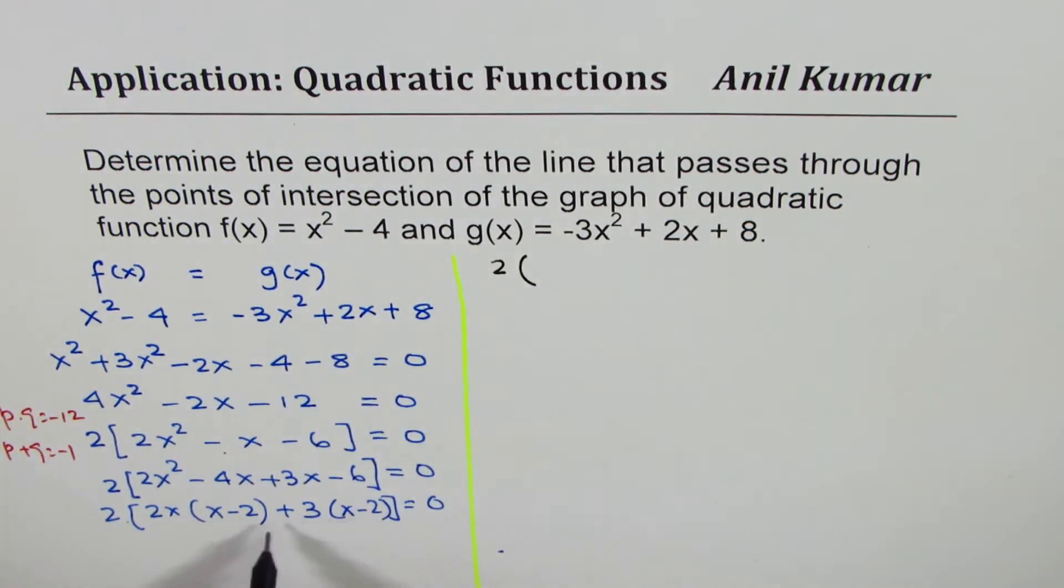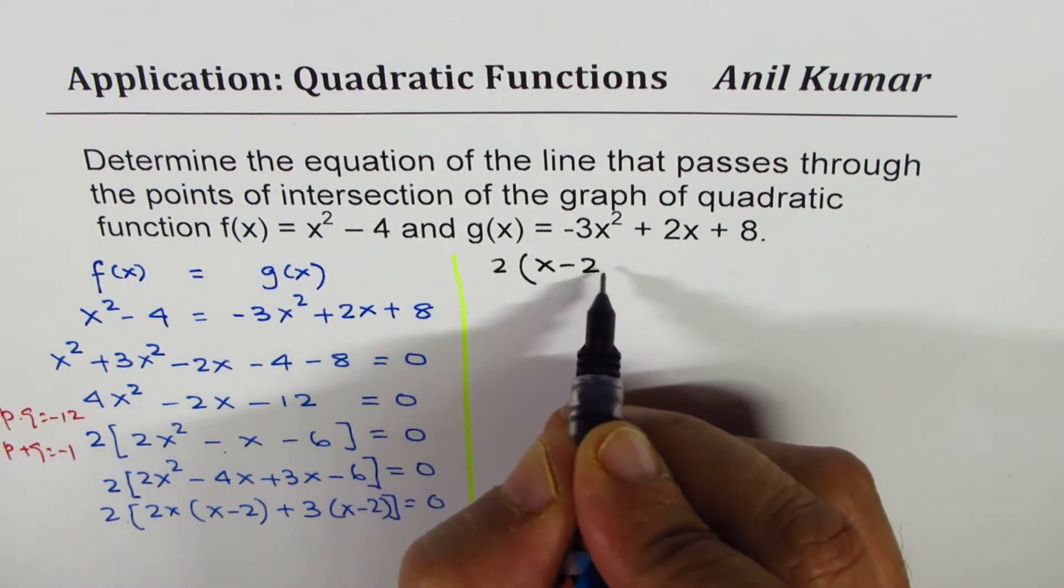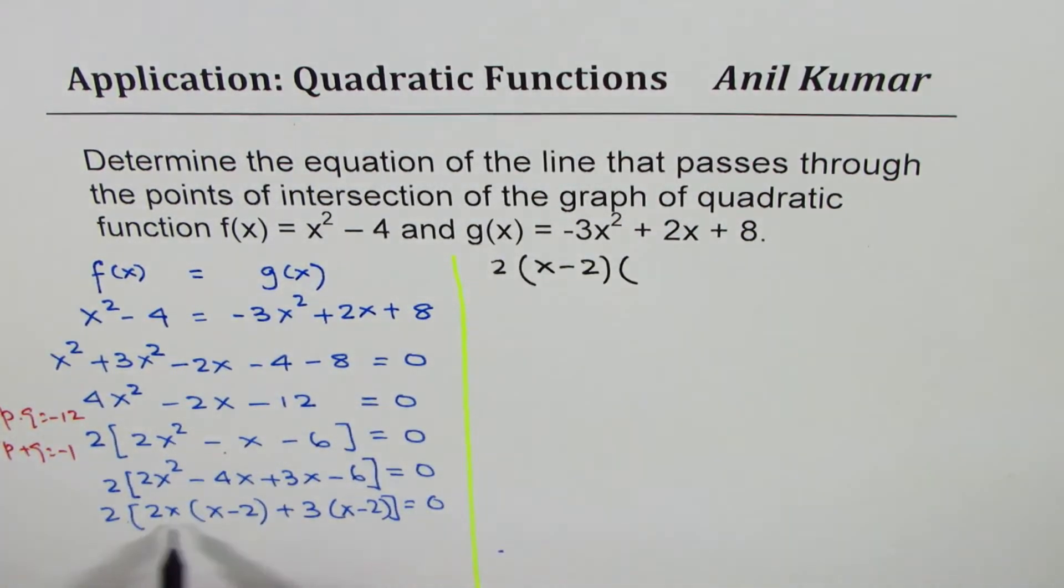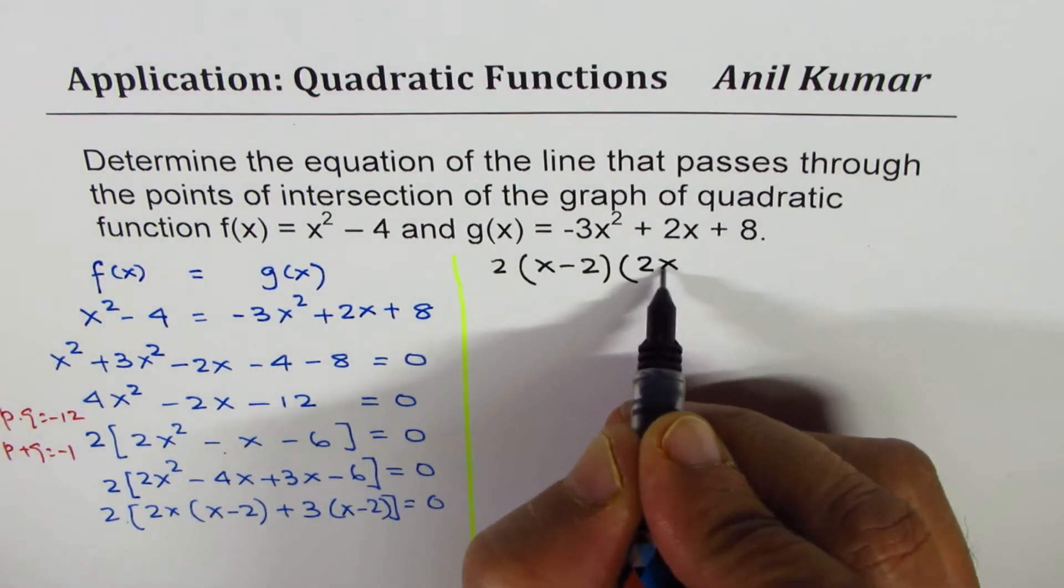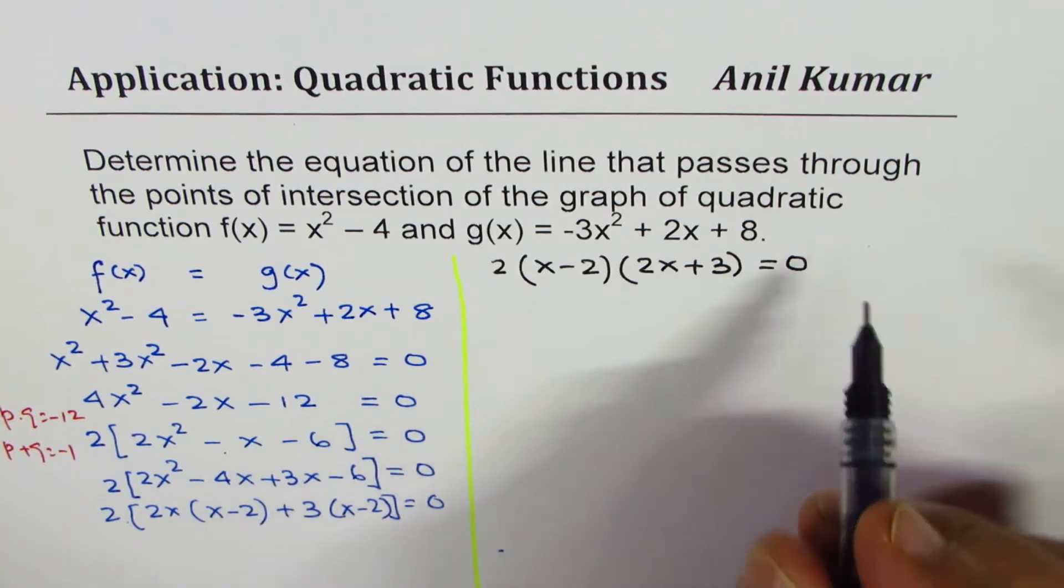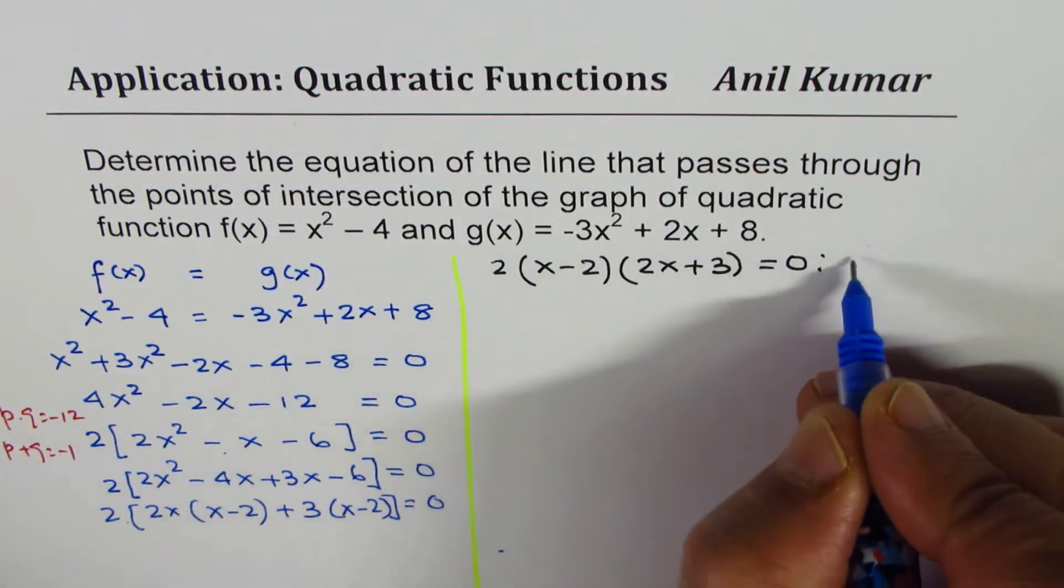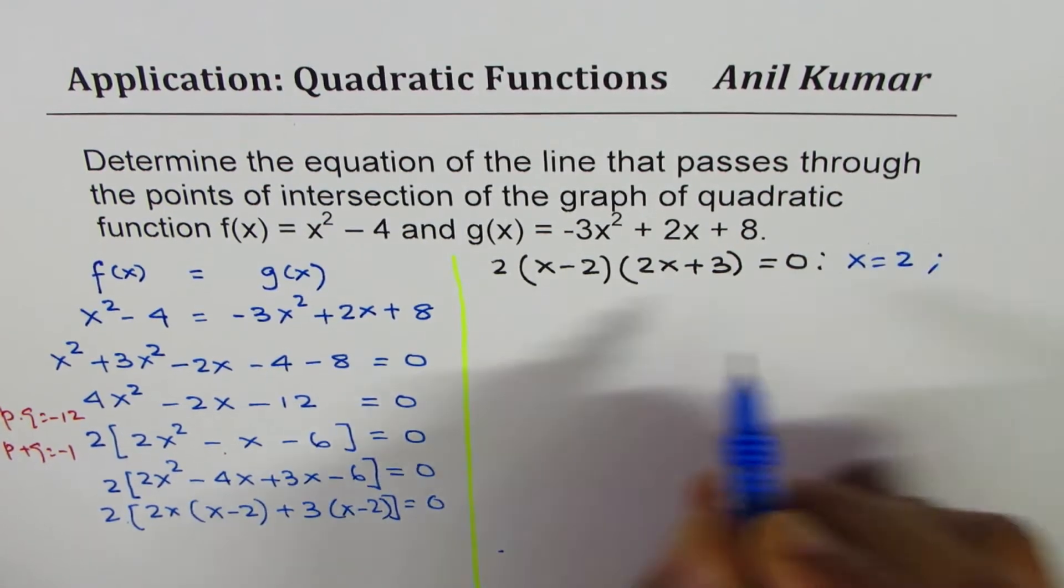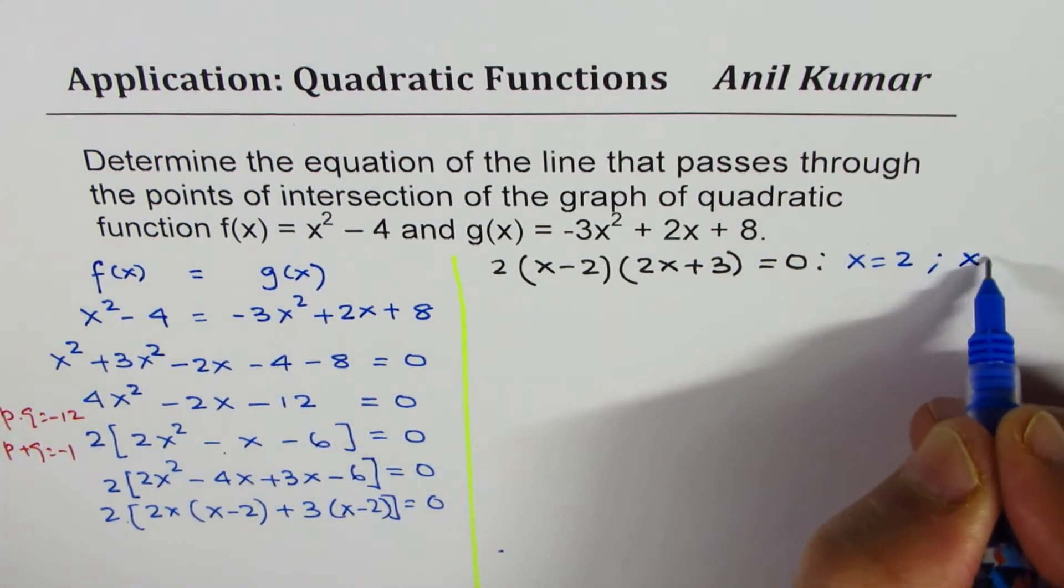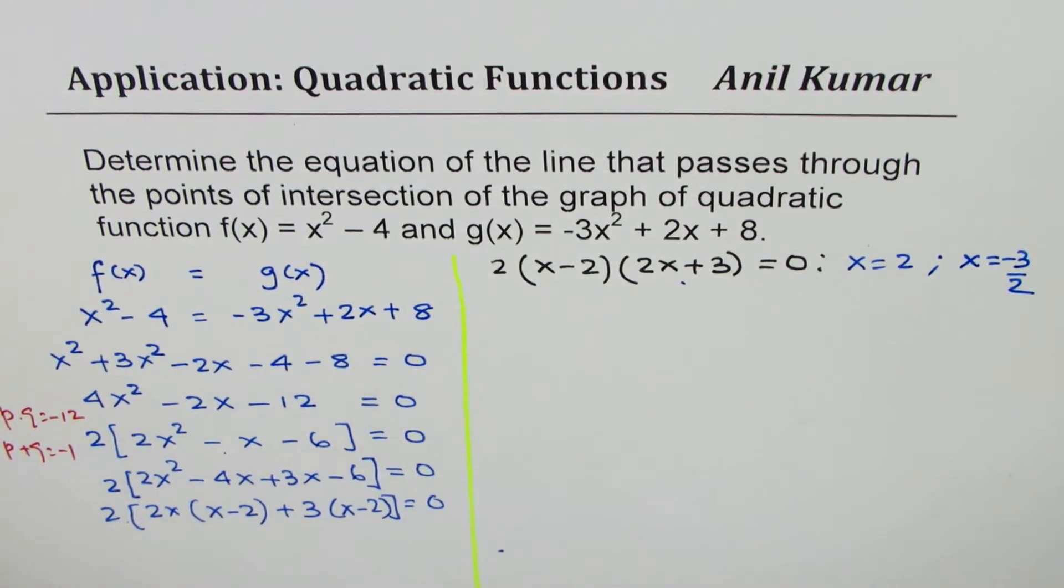So we have 2 times (x - 2)(2x + 3) = 0. That gives us two zeros: one is at x = 2 and the other one is at x = -3/2. These are the two zeros which we have got.